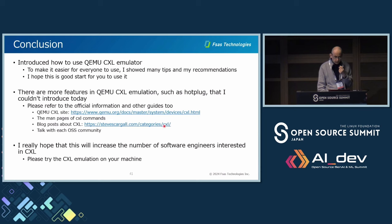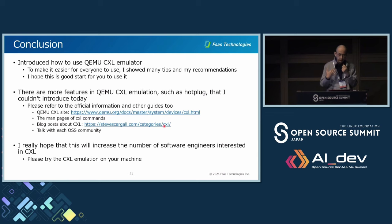In conclusion, I introduced how to use QEMU's CXL emulator. To make it easier for everyone to use, I showed many tips and my recommendations, and I hope this is a good start for you. There are more features in QEMU CXL emulation, such as hot plug, that I couldn't cover today. Please refer to the official information: the QEMU official site, the man page of the CXL command, blog posts about CXL, and talks with each OSS community. I really hope this will increase the number of software engineers interested in CXL — please try the CXL emulator on your machine.